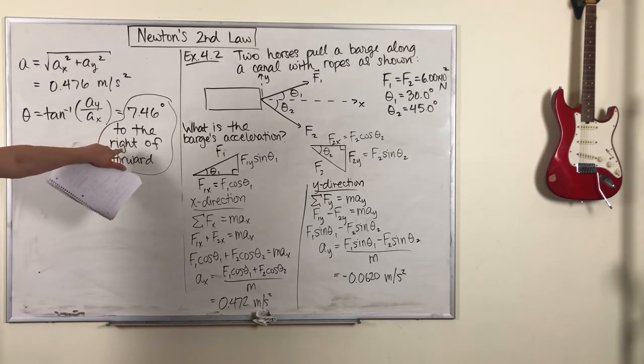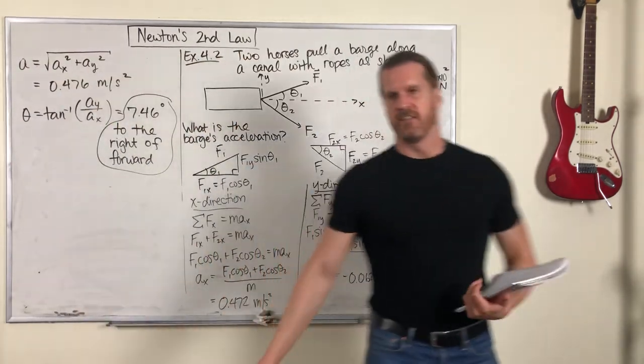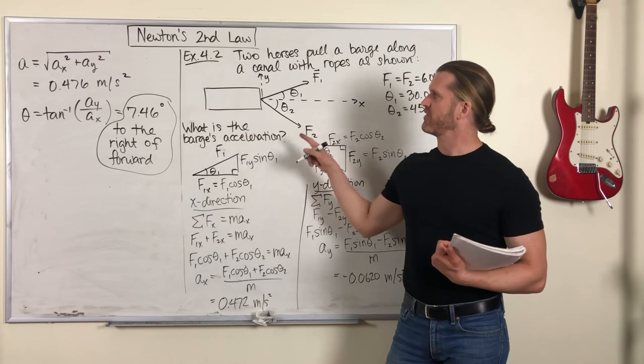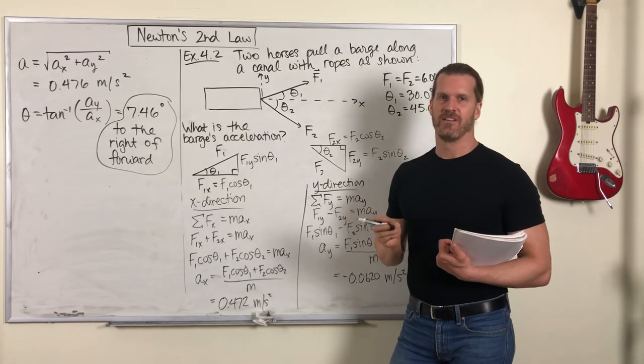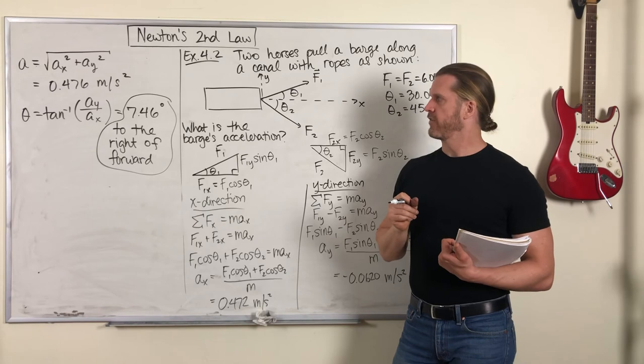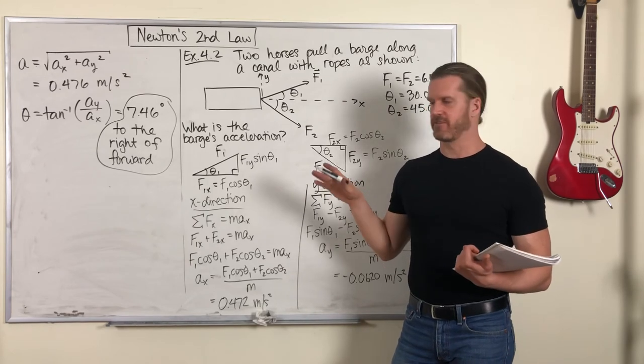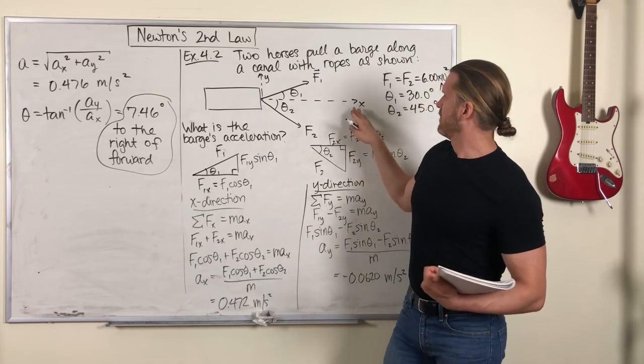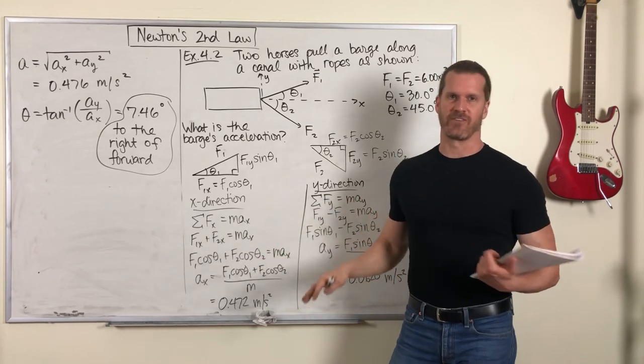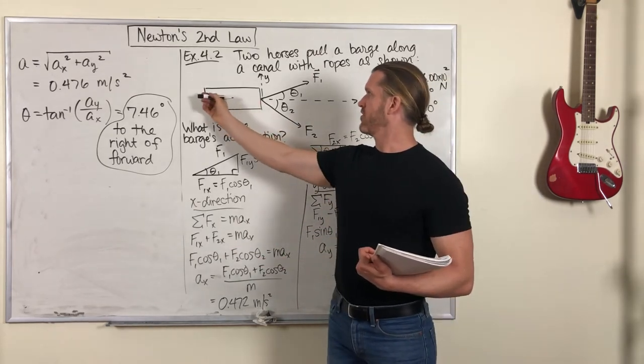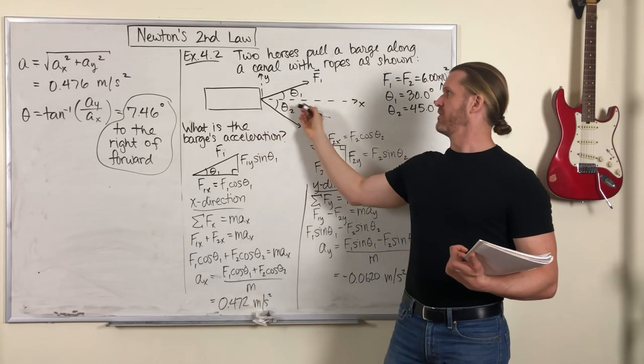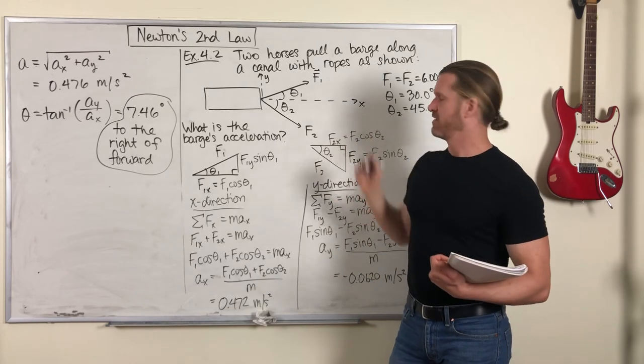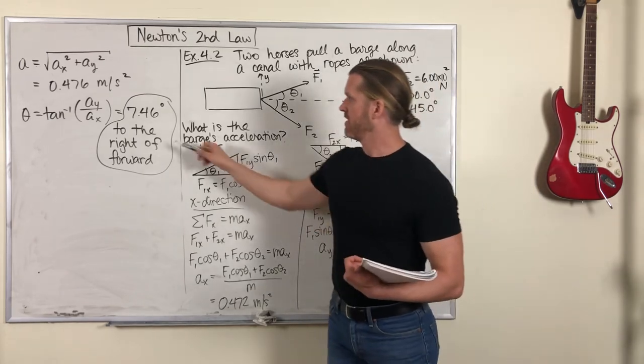And notice how I wrote this. You might have wanted to say that it's 7.46 degrees below the X axis, but saying it that way would be a little confusing because 'below' kind of makes it sound like it's pointing underground. Remember, X and Y are both in the horizontal plane for this example, so what's really happening is the barge is going this way, which is slightly to the right of the X axis, which would be straight forward.